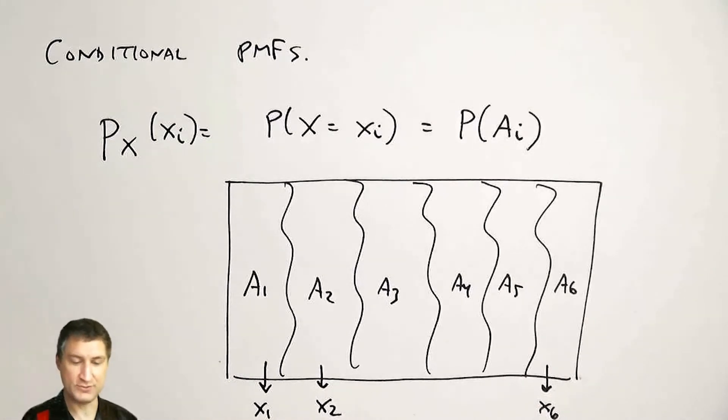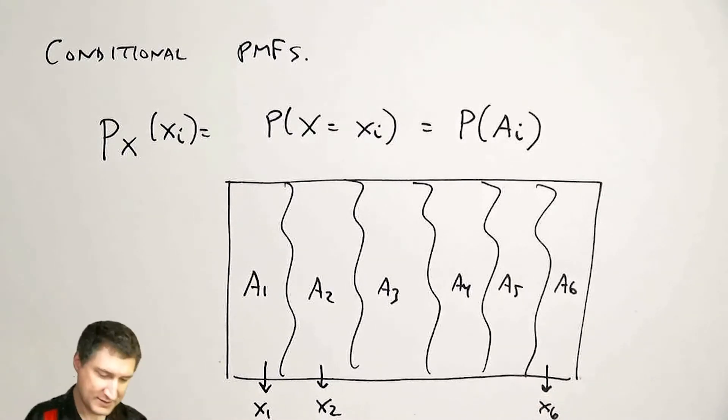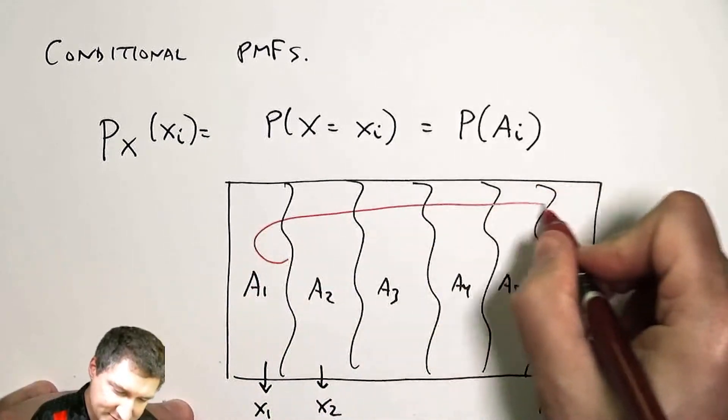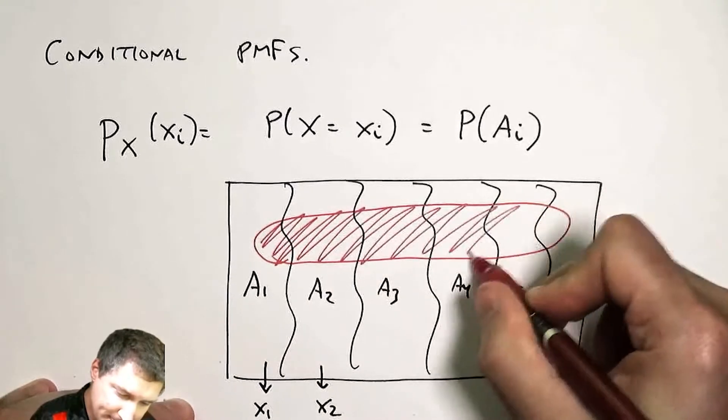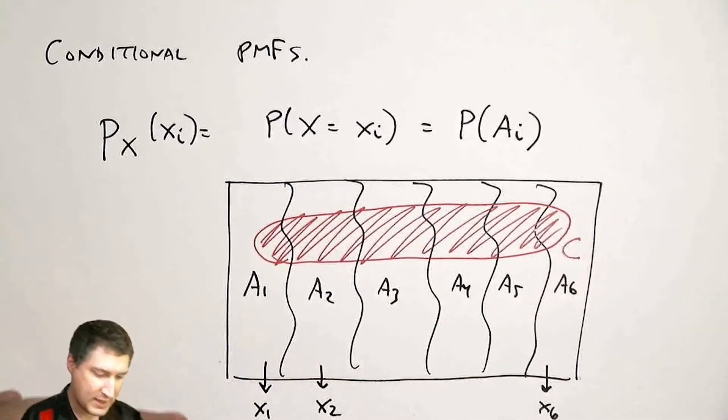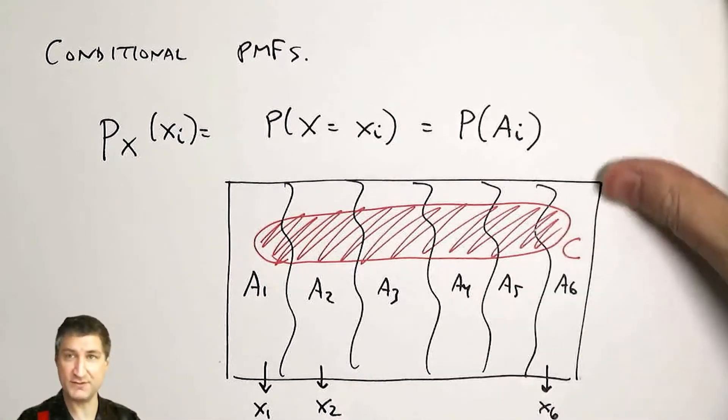And now we're going to condition on some new event C. I'm telling you this new event C occurred, and I want to know how does that change or update the PMF from what it was before to what it is given this new information.